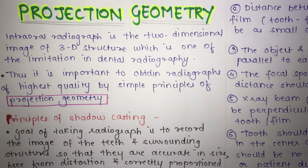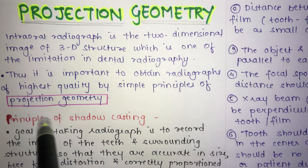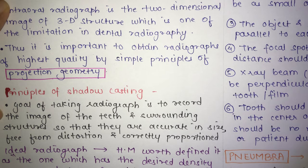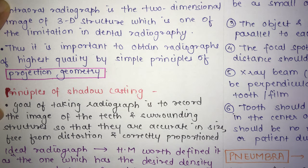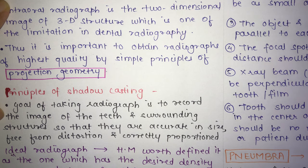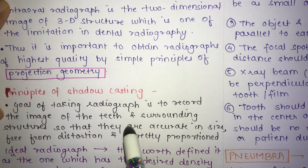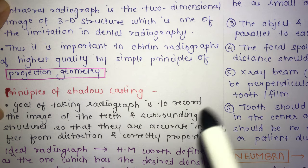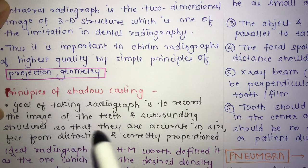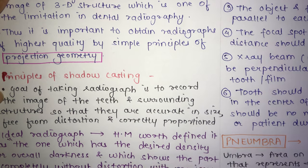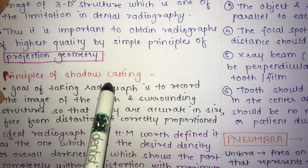It is important to obtain a radiograph of the highest quality by following the simple principles of projection geometry. The goal of taking a radiograph is to record the image of the teeth and surrounding structures so that they are accurate in size, free from distortion, and correctly positioned or proportionate.